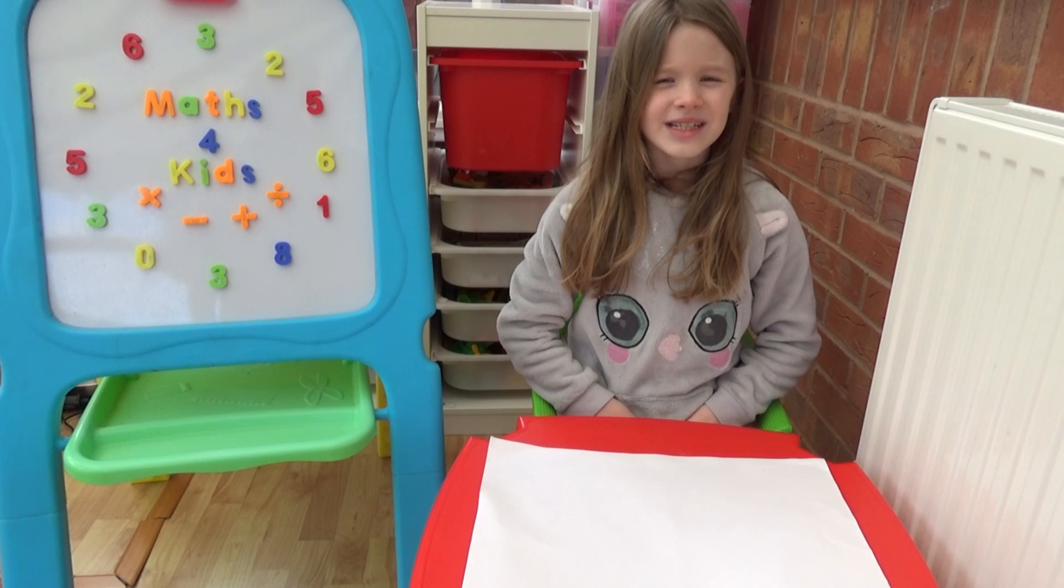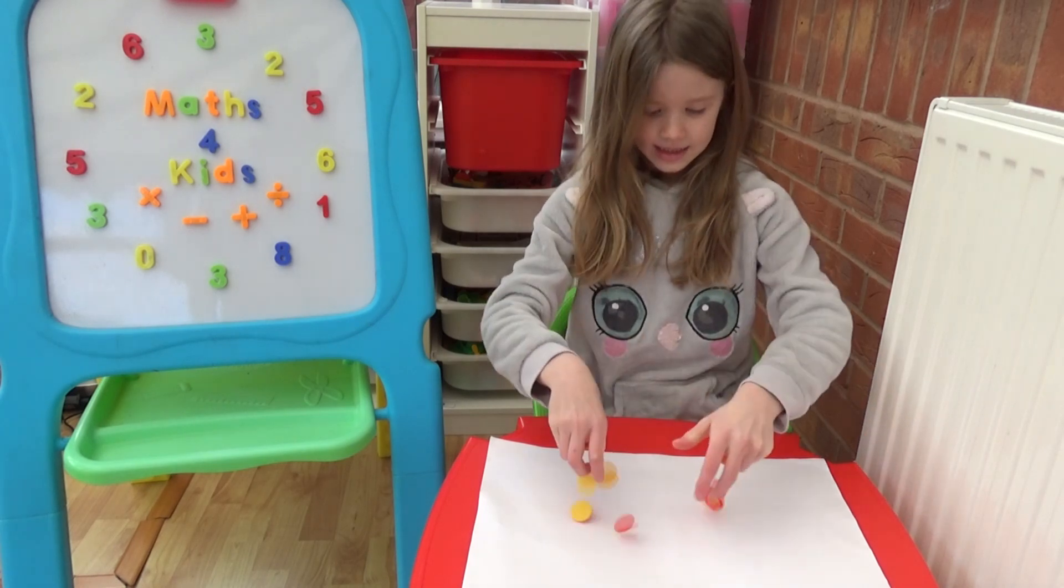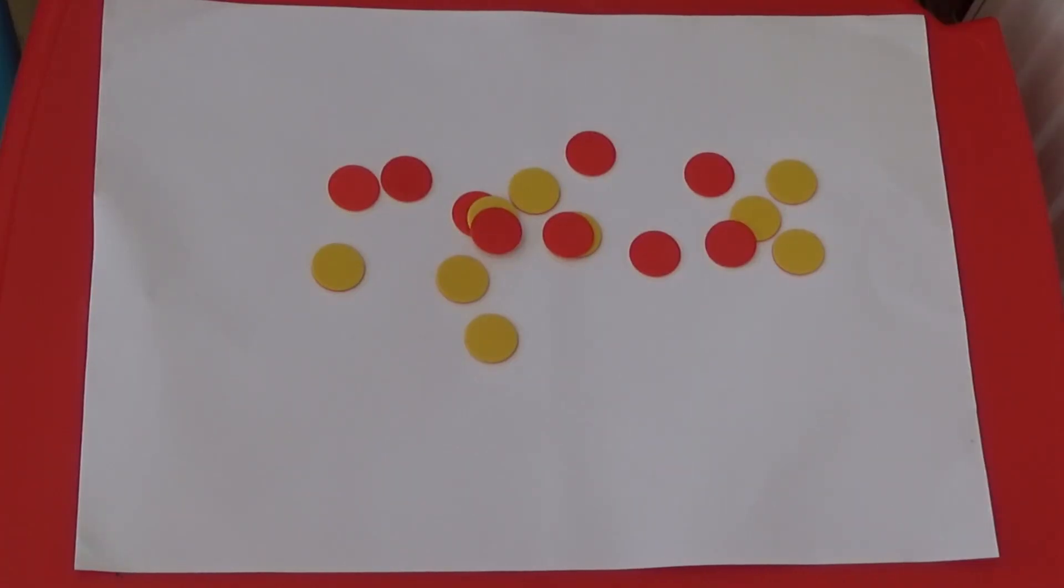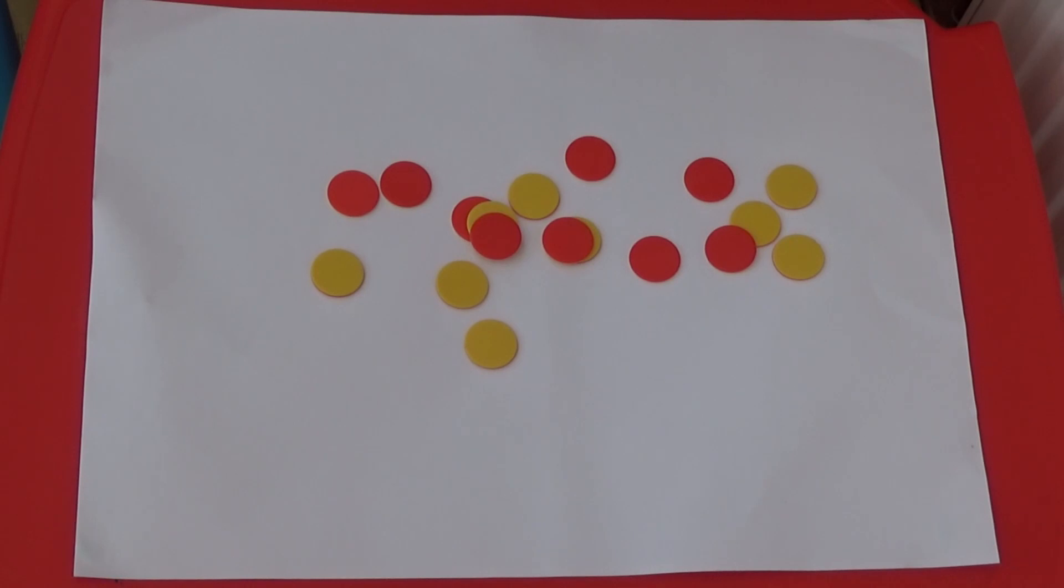Take some counters and drop them on the table. Quickly estimate how many are yellow and how many are red. I would estimate there are ten reds and eight yellows. I am going to check how many there actually are.